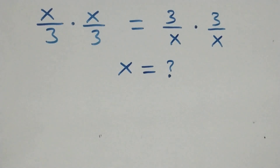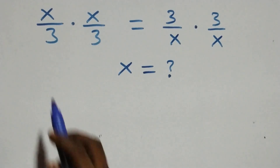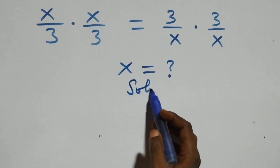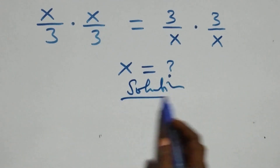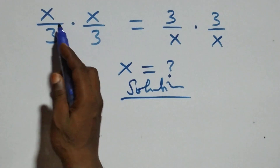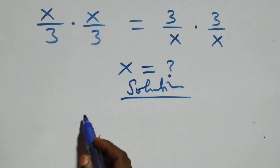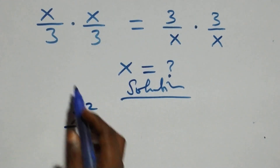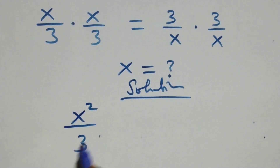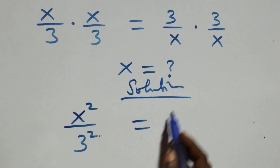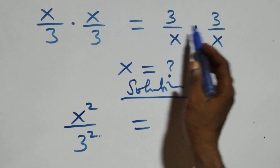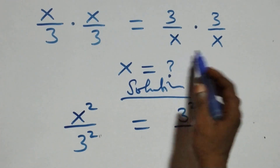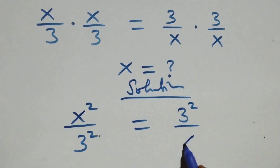Hello y'all, welcome. Here we solve a nice algebraic equation. From what we have here, we can multiply directly: x times x is x squared, over three times three which is three squared, equals three times three which is three squared over x times x which is x squared.